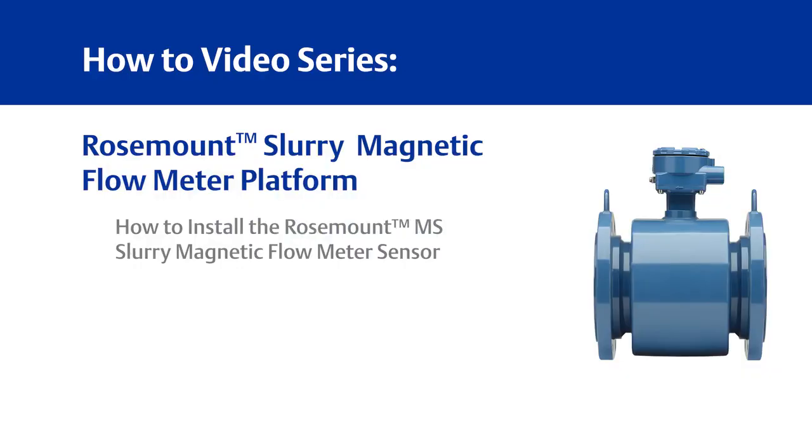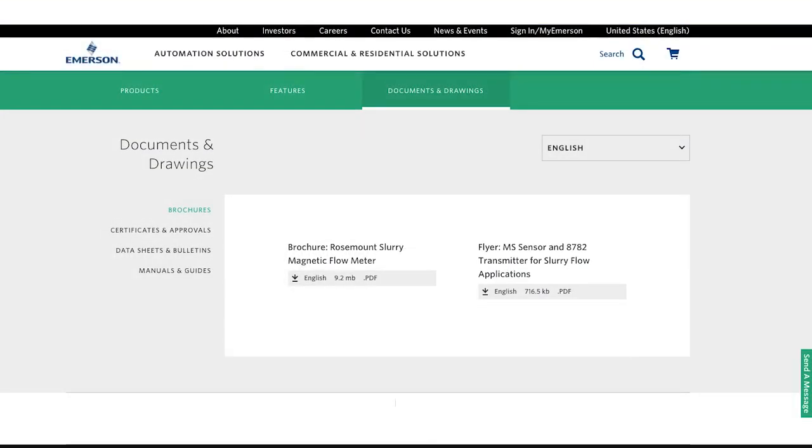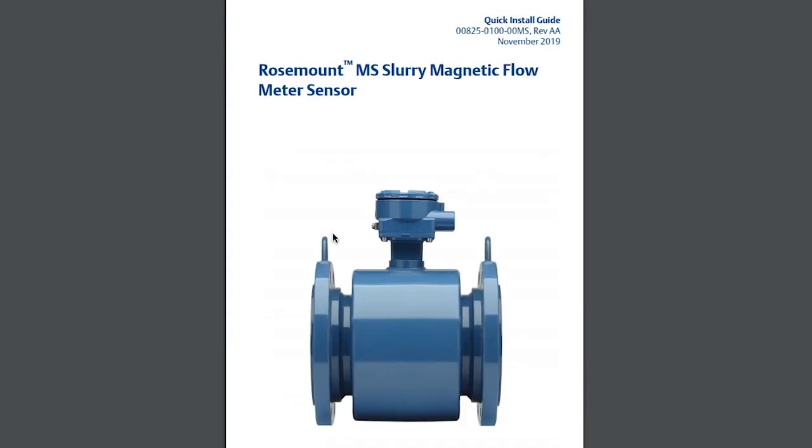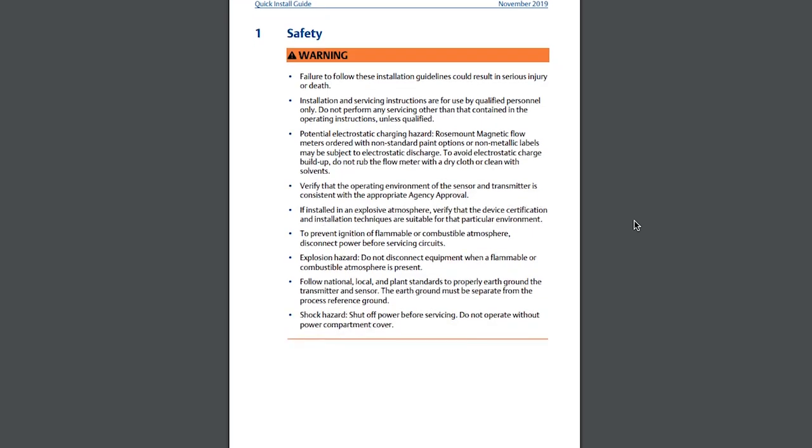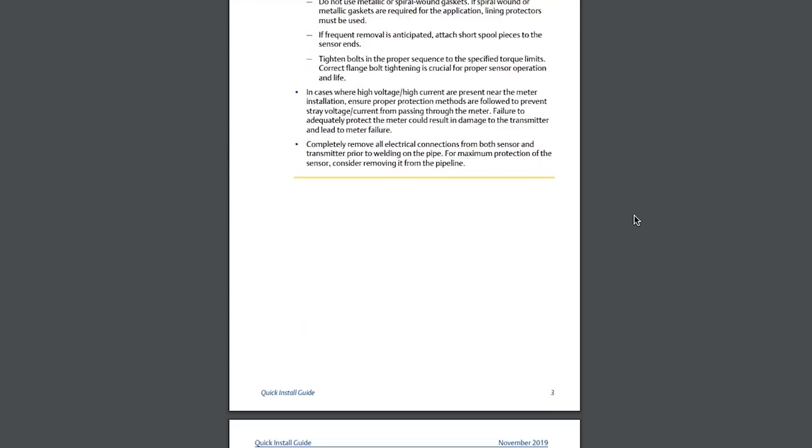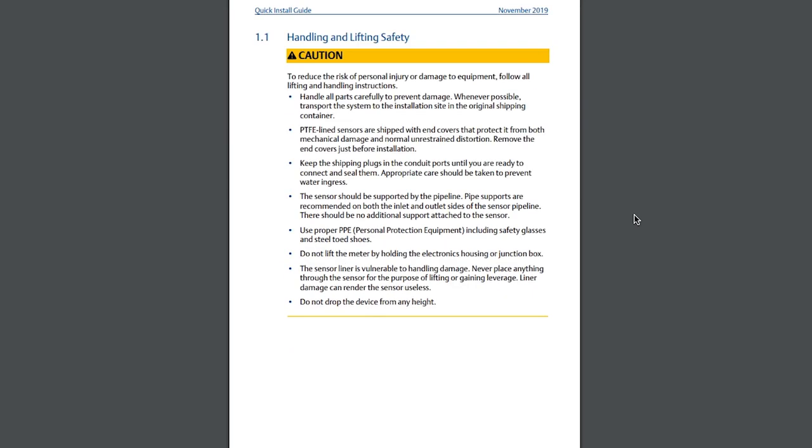This concludes the how-to video for installing the Rosemount MS Slurry Magnetic Flow Meter Sensor. For the complete set of installation instructions, please refer to the MS Installation Guide and Manual in the MS Quick Install Guide. Note the warnings and safety information found in the 8782 Quick Start Guide and take necessary precautions to ensure safe work practices.